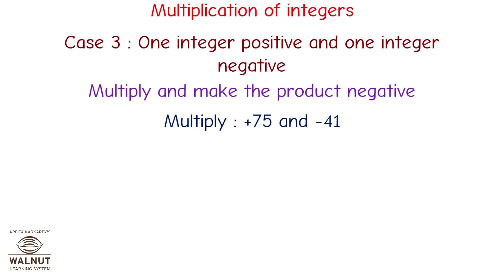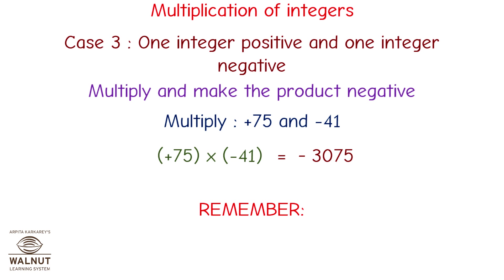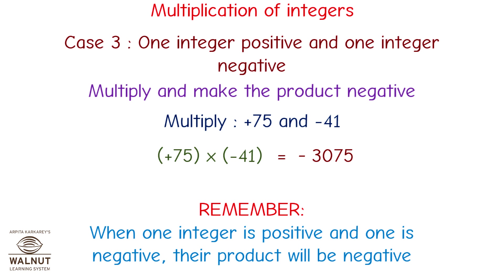Multiply plus 75 and minus 41. Plus 75 multiplied by minus 41 is equal to minus 3075. We multiply the numbers directly and get the answer. Since one number is positive and one number is negative, the product becomes negative. Remember, when one integer is positive and one is negative, their product will be negative.